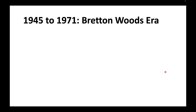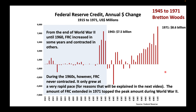During the Bretton Woods era, from the end of World War II until 1960, Federal Reserve credit increased in some years and contracted in other years. During the 1960s, however, Federal Reserve credit never contracted — it only grew at a very rapid pace. The amount of Federal Reserve credit extended in 1971 topped the peak amount extended during World War II. In 1971, the Fed created $8.6 billion, versus a peak of just $7.5 billion at the height of World War II.